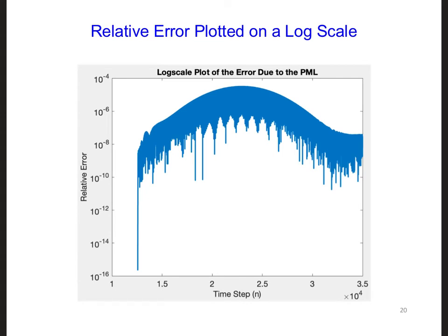Often you will see the relative error plotted on a log scale as shown here. So the y-axis is a log scale. You can create a plot like this using semilogy and then you can plot the error. So this plot is showing the same information as on the last slide. We get the same amplitude here. It's just on a log scale.